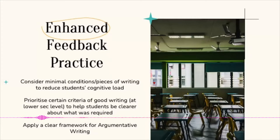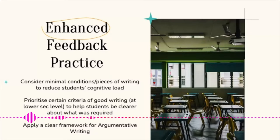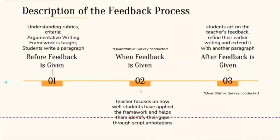The first point means we prioritize certain criteria of good writing — in the rubric we zoom in on certain things and don't apply the whole rubric to the piece. The third thing is we use a clear structure or framework for argumentative writing.